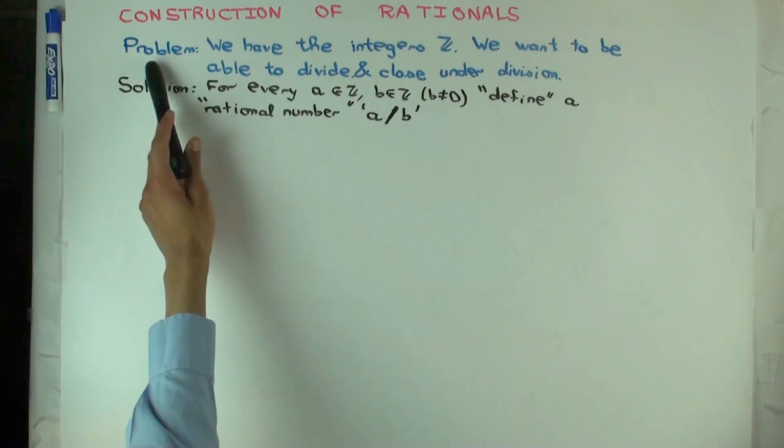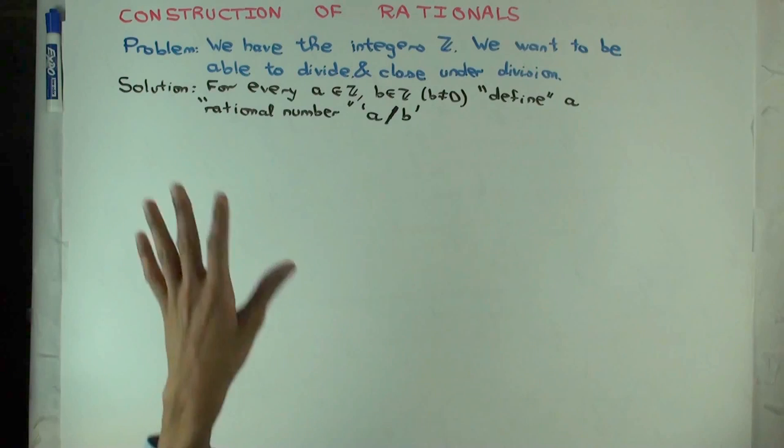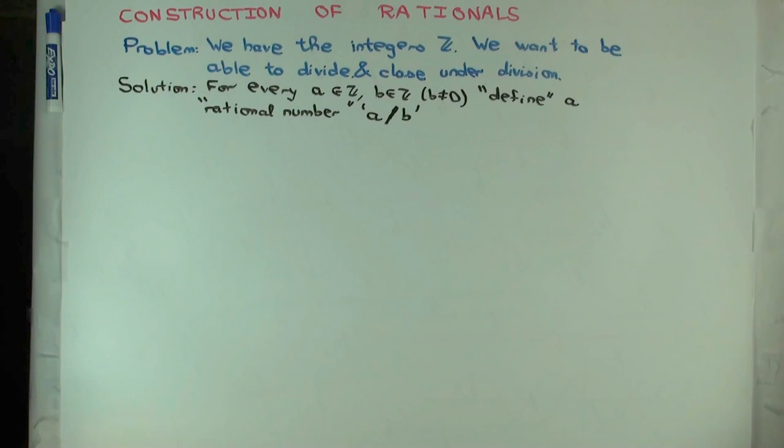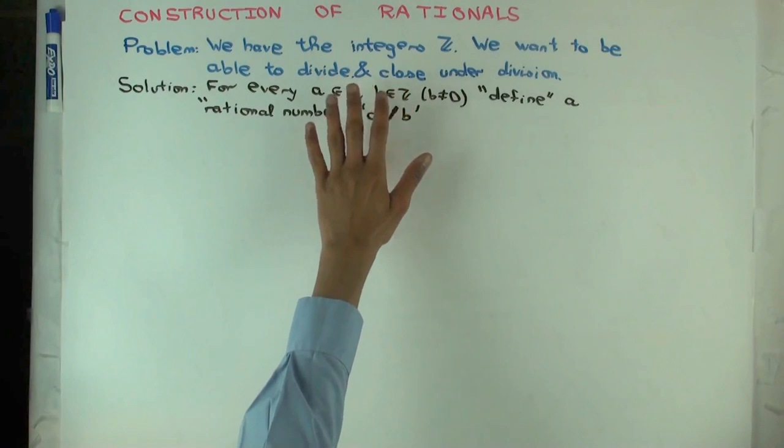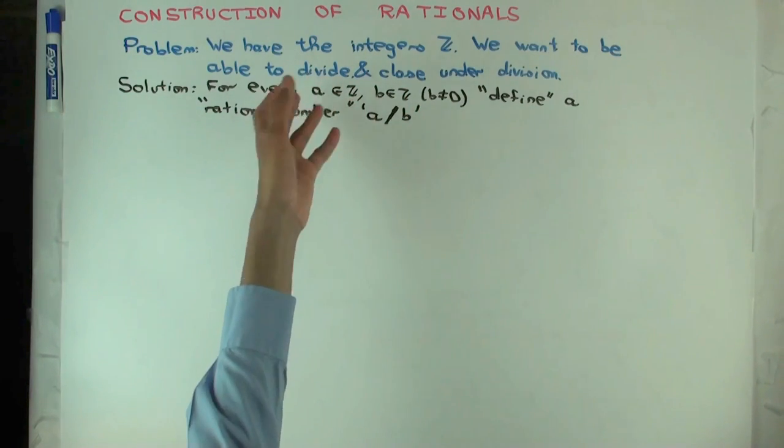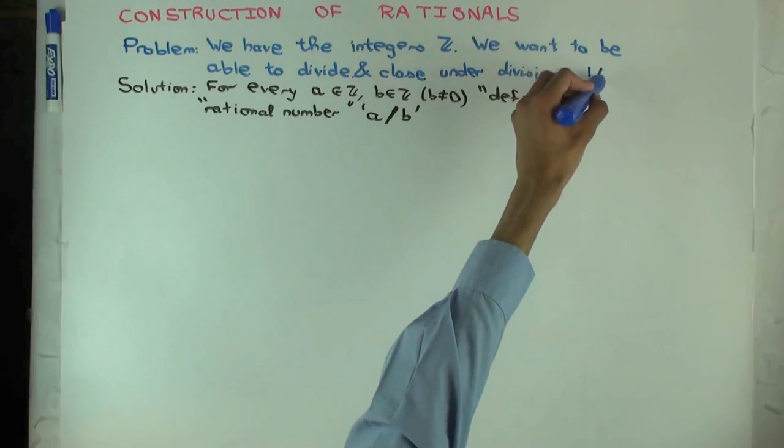Right, so the problem is we have the integers but we don't have closure under division for integers. So if you divide one by two then you get one half and there's no integer called one half. Now this problem has a genuine aspect and a part which we cannot really do anything about, so that part we ignore.